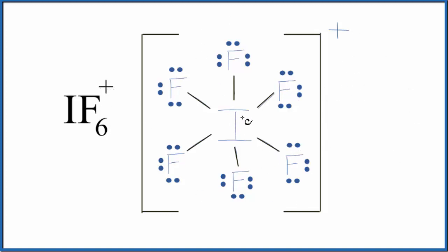And you'll note that the iodine, the central iodine here, it has one, two, three, four, five, six bonds. So each bond is a pair of electrons, so it has more than eight valence electrons. But that's okay because iodine can have an expanded octet.